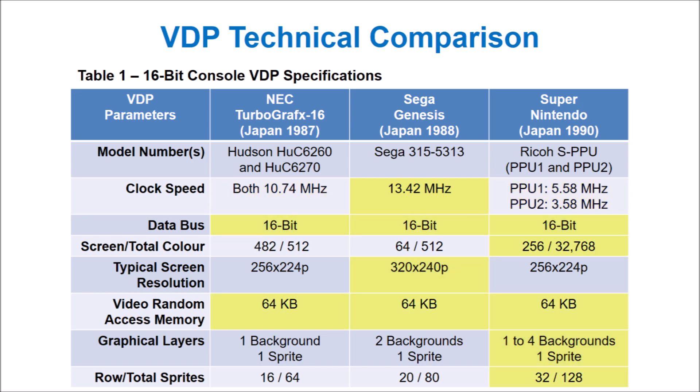For reference, I've highlighted the best parameters. It seems that the Genesis and Super Nintendo are fairly even. The TurboGrafx-16 isn't too far behind, and we'll see how they perform in a real test.